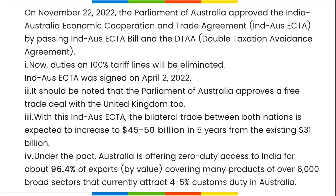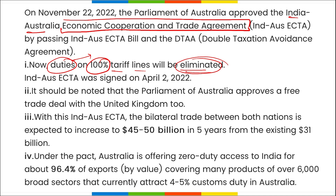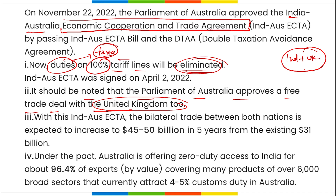Remember the term ECTA — the India-Australia Economic Cooperation and Trade Agreement. Under this, duties on 100% of tariff lines will be eliminated. It should also be noted that the Australian Parliament has approved a free trade deal with the UK as well, while India and the UK are still waiting on their own free trade agreement.